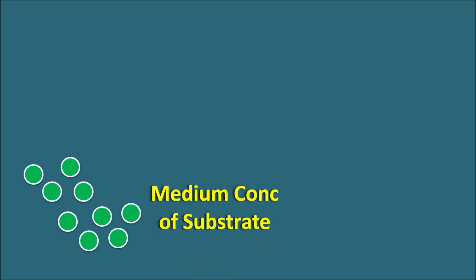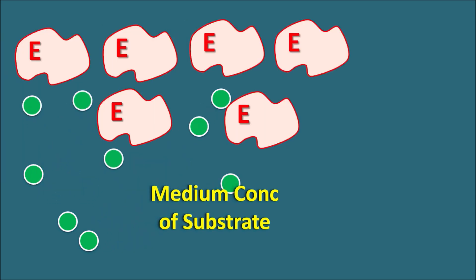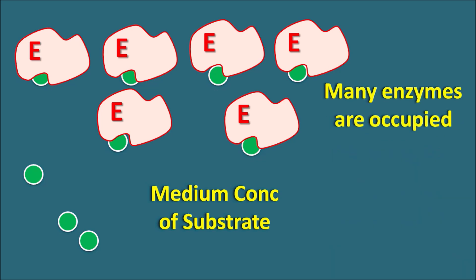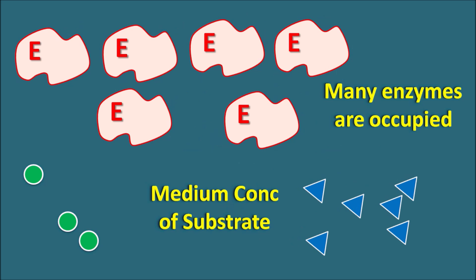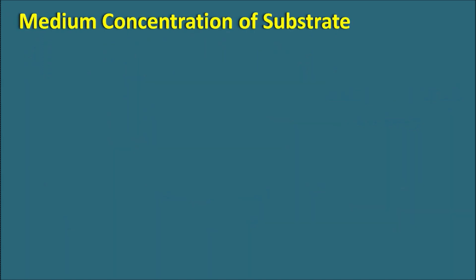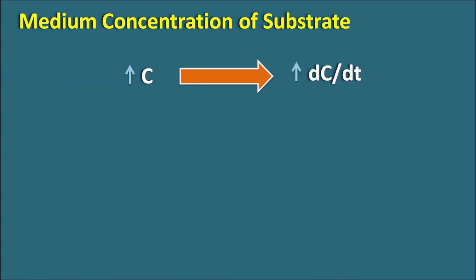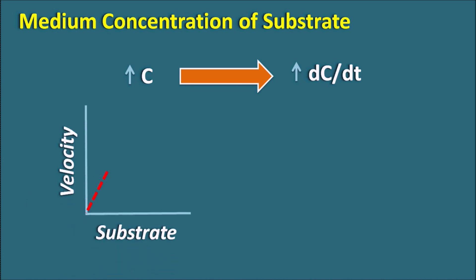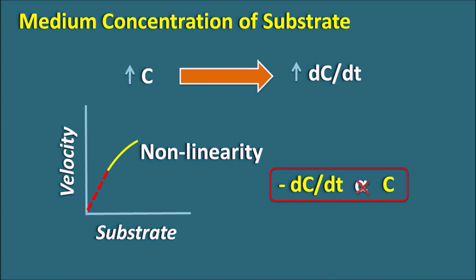Now at medium concentration of substrate, the enzymes are the same. The substrate molecules bind with the enzymes, and many enzymes are occupied with very few substrates not interacting. When these substrate molecules are converted into products, a few free enzymes are still available for further substrate molecules. At medium concentration, as we increase the concentration, the rate of reaction increases but not in a linear way. Plotting velocity versus substrate shows a second phase with non-linearity in the curve, indicating mixed-order kinetics.